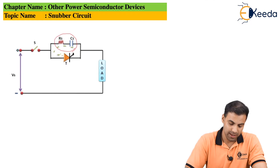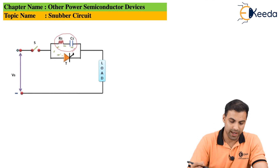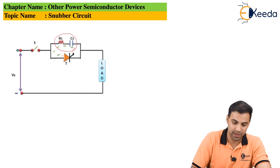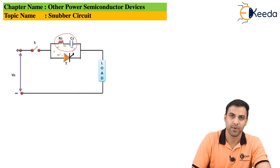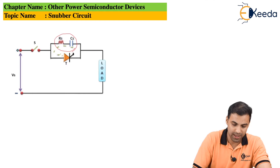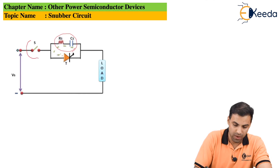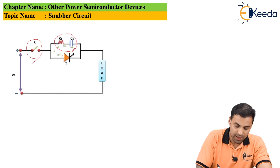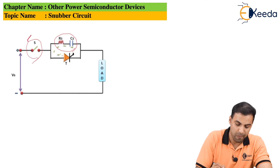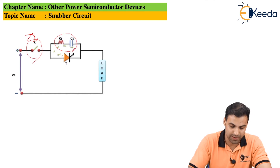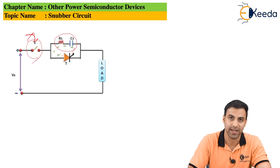As you can see in this circuit diagram, this is the circuit diagram of a snubber circuit. Here I have connected a resistor and a capacitor in parallel with the thyristor.